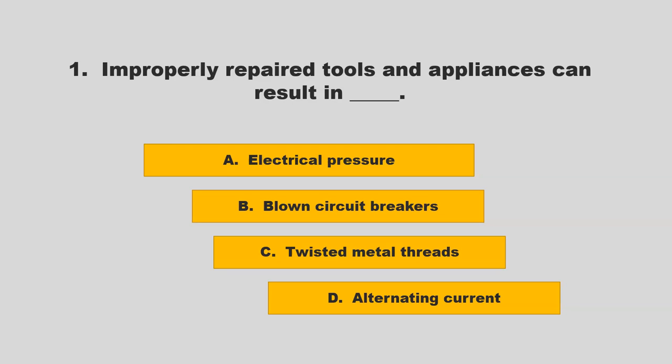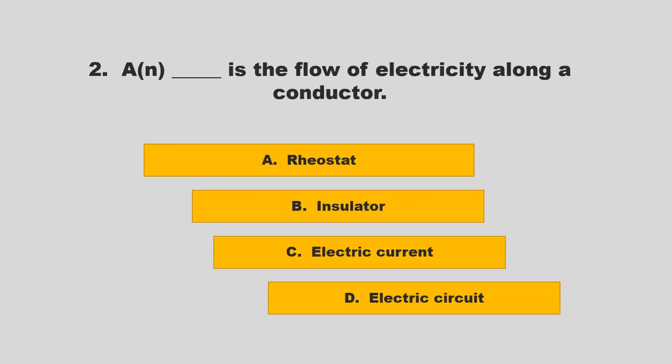Improperly repaired tools and appliances can result in blank. Is it electrical pressure, blown circuit breakers, twisted metal threads, or alternating current? If you chose B, blown circuit breakers, you are correct.